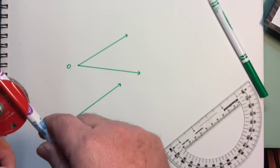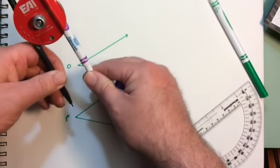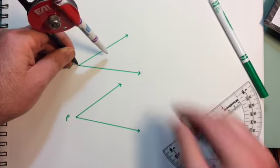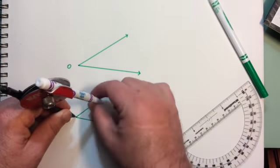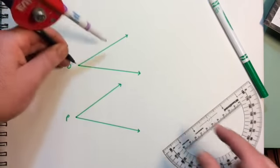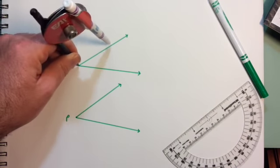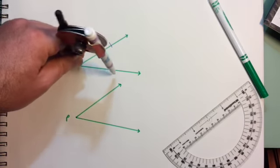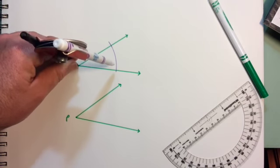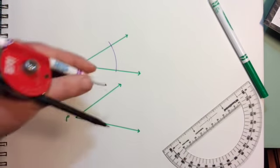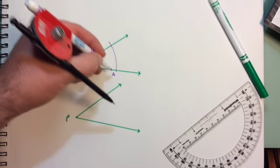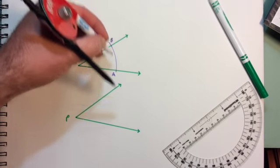I am going to begin by setting my compass to a distance that fits on both of them. It could be any distance. I'm going to make an arc, and I am going to label this point A and this point B.